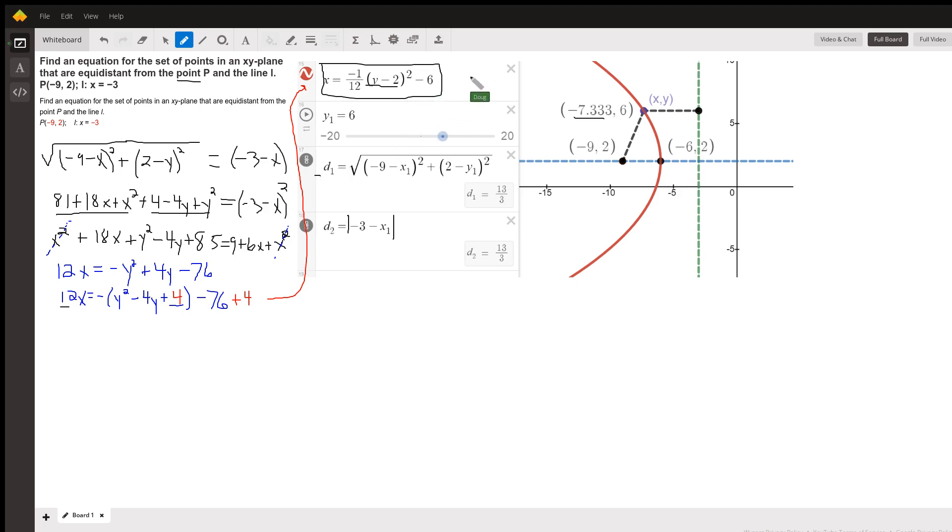So that is the process that you go through to find the equation of a parabola in general. And you'll find some textbooks that'll go through all those steps where the focus is some specific point, but written with the letters a and b, for example. And the directrix is the line x equals d, something like that.